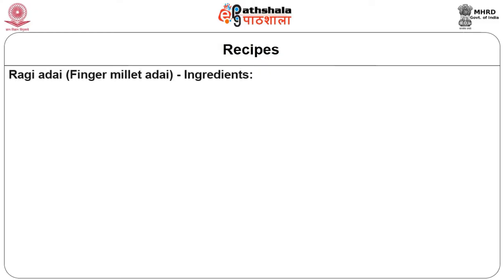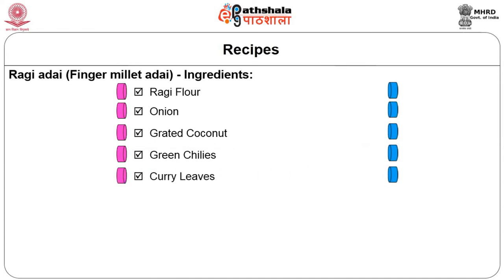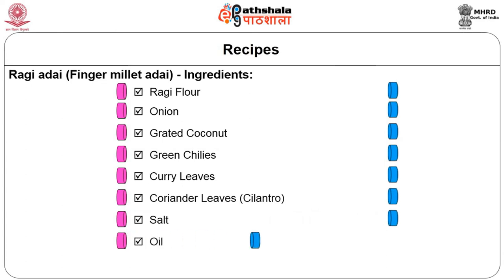What are the basic ingredients for Raggi Adai? You need raggi flour 2 cups, onions 2 to 3 finely chopped, grated coconut half a cup, green chillies 3 finely chopped, curry leaves 2 sprigs finely chopped, coriander leaves or cilantro one quarter cup finely chopped, salt to taste, and oil for frying. You can use water or buttermilk to make the dough.